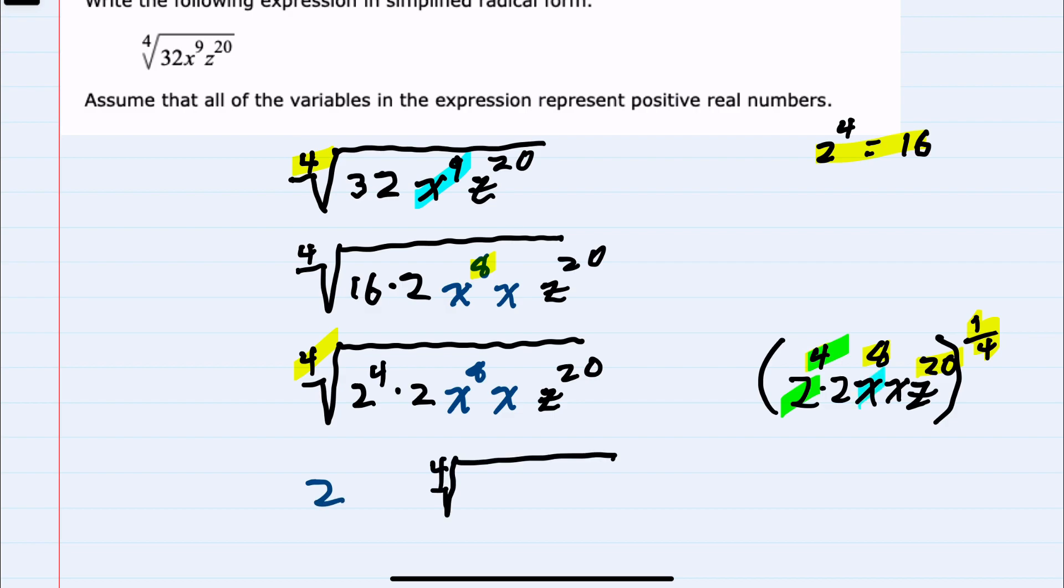The x to the 8, if I divide that power by 4, will come out as x squared. The z to the 20 is also a power that's divisible by 4, so it will come out as z to the 5.